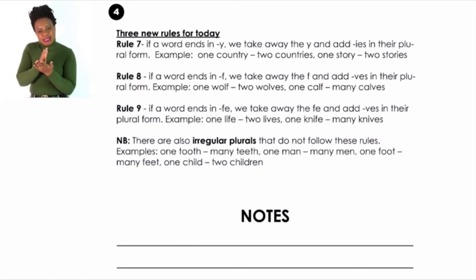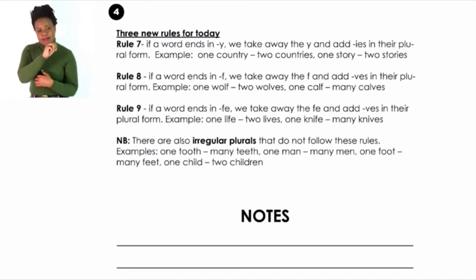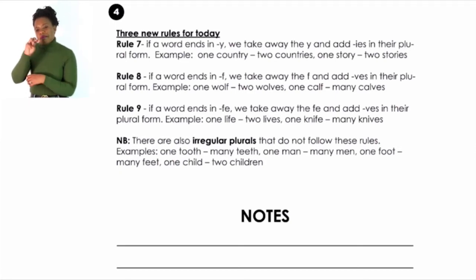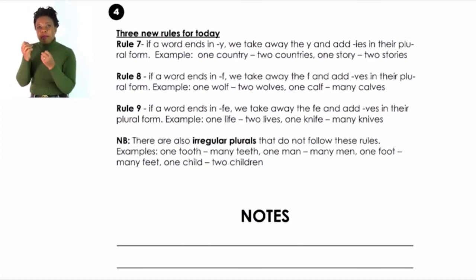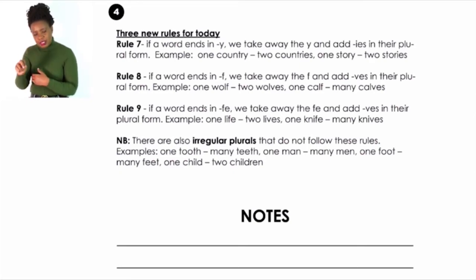Some nouns do not follow these nine rules. For example, tooth changes completely to teeth; man changes to men; foot to feet; child to children. Remember these irregular forms — they are very important.